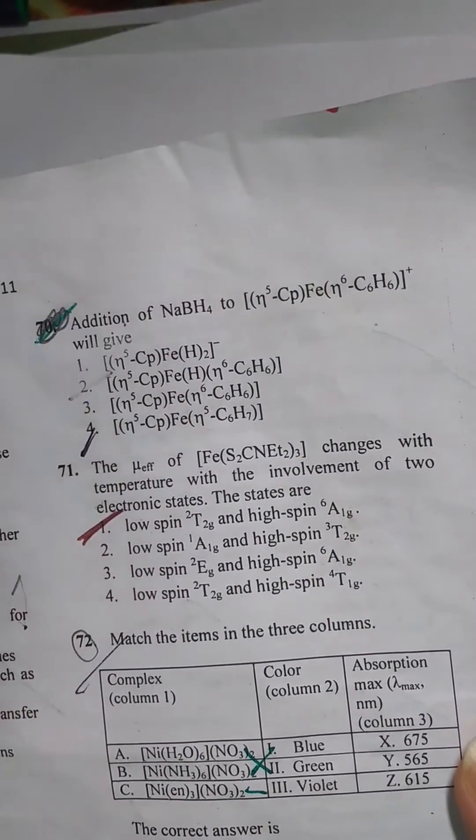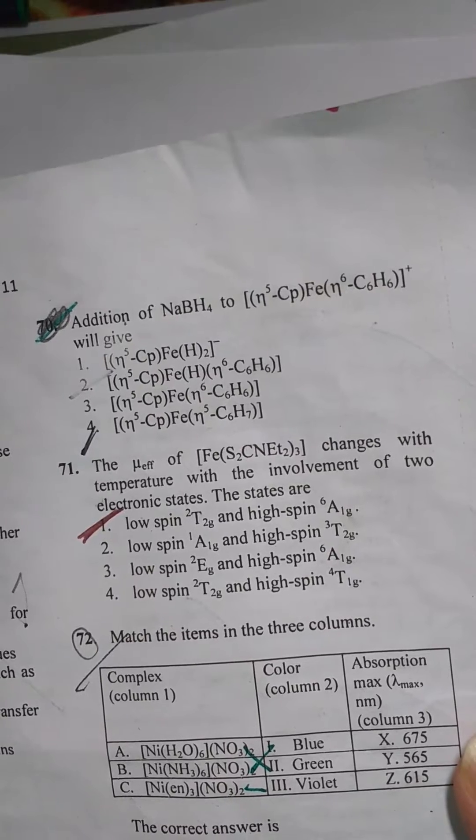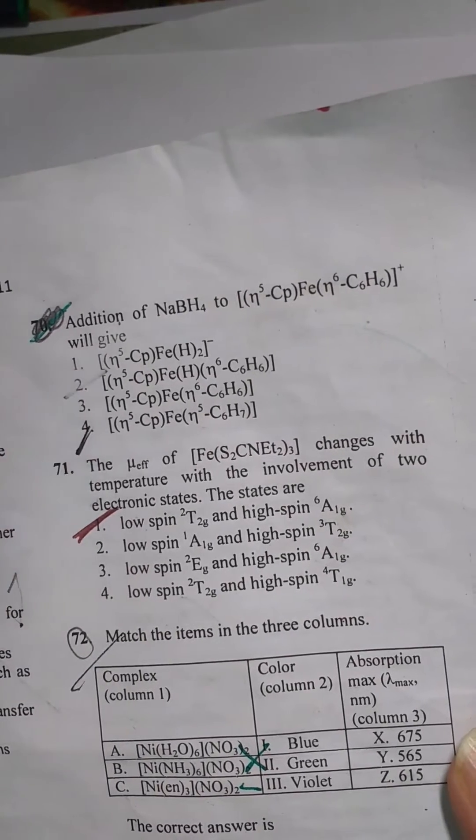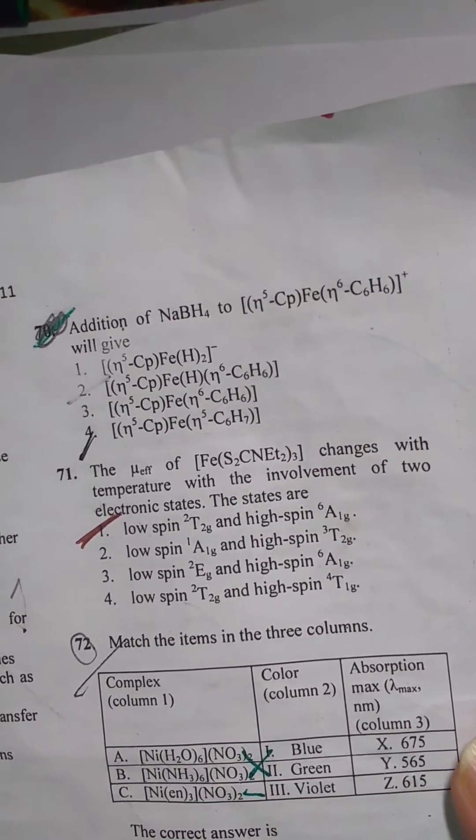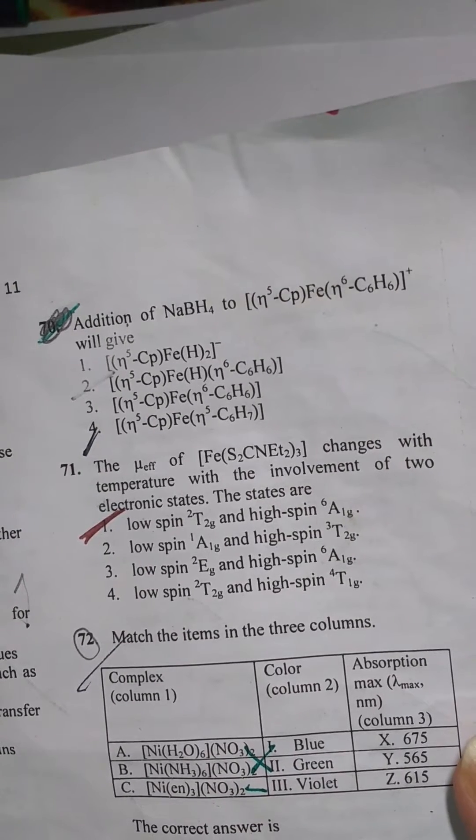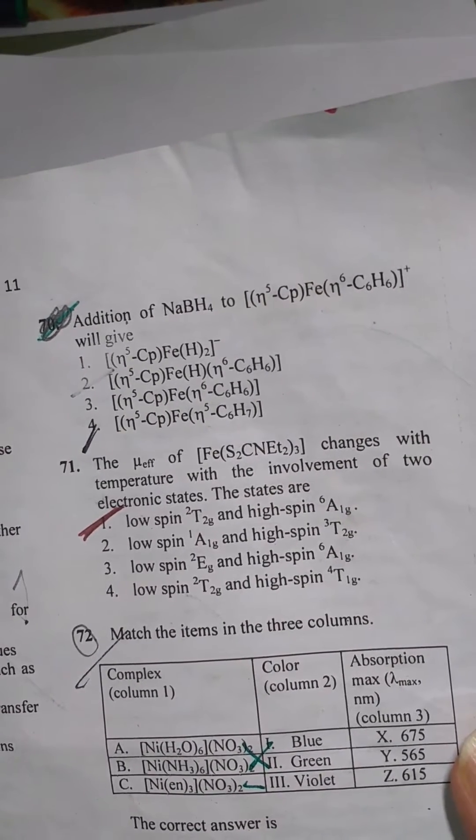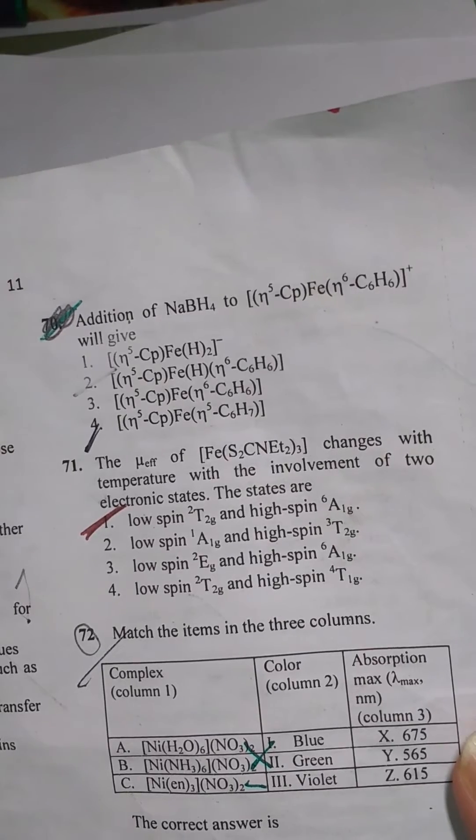NaBH4 as we know is a good reducing agent and these are the four given species. I have tried a lot to look up a valid explanation to this question but I was unable to find any valid claim.